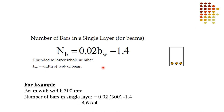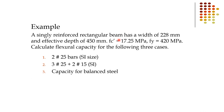An example problem: A singly reinforced rectangular beam has a width of 228mm, an effective depth of 450mm, FC′ = 17.25 MPa, and FY = 420 MPa. Calculate the flexural capacity for three cases: (1) two #25 bars, (2) three #25 plus two #15 bars, and (3) capacity for the balanced section. These three cases will be solved in the next lecture.